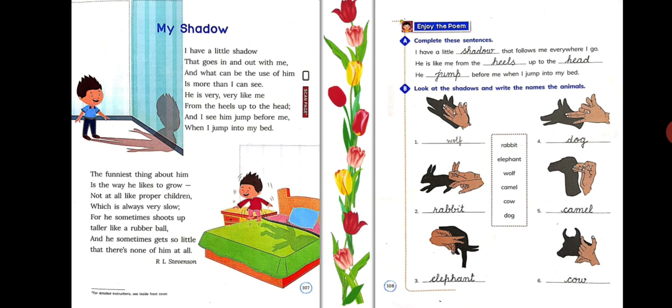In this stanza, the poet says my shadow has a habit to grow much more than me. And he finds this thing really funny because this is just not like how a child grows in real. Because in reality, a child grows slowly, not immediately. Then he added that sometimes I wonder that he suddenly shoots up like a rubber ball.